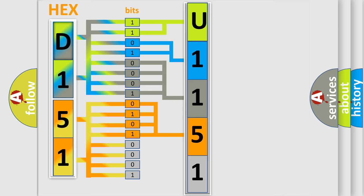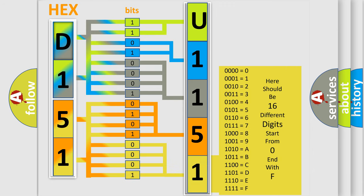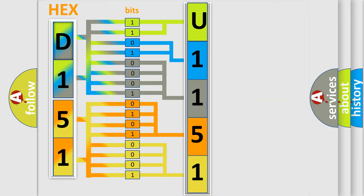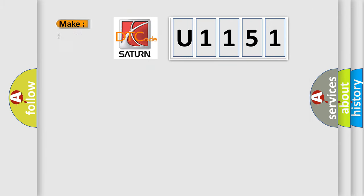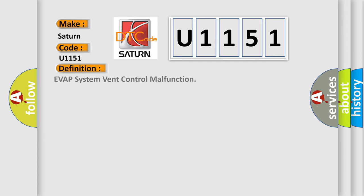A single byte conceals 256 possible combinations. We now know in what way the diagnostic tool translates the received information into a more comprehensible format. The number itself does not make sense if we cannot assign information about what it actually expresses. So, what does the diagnostic trouble code U1151 interpret specifically for Saturn car manufacturers? The basic definition is: EVAP system vent control malfunction.